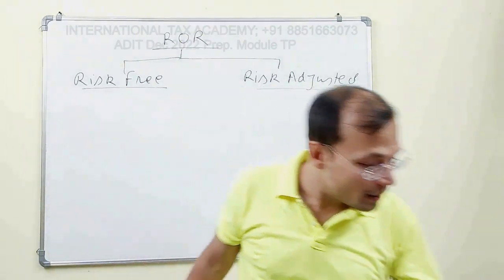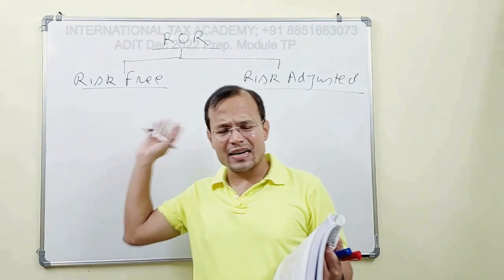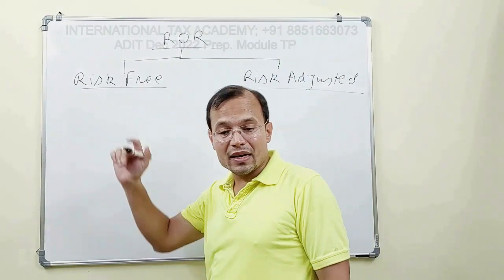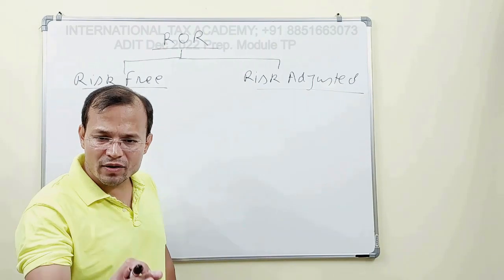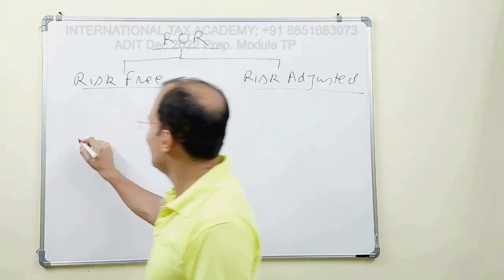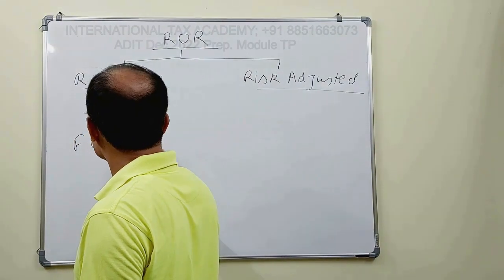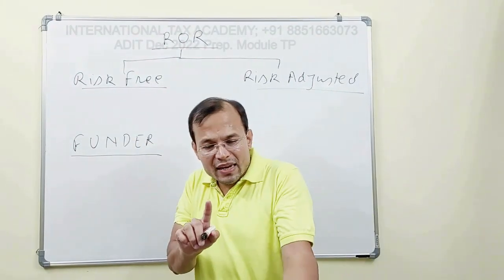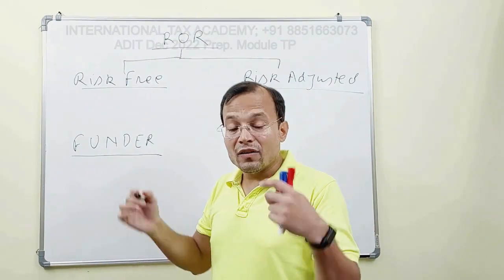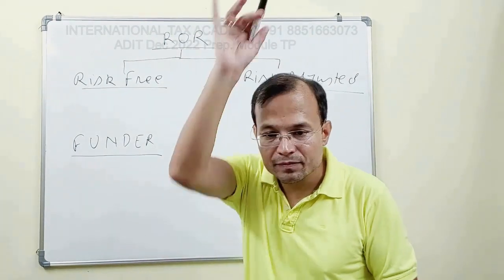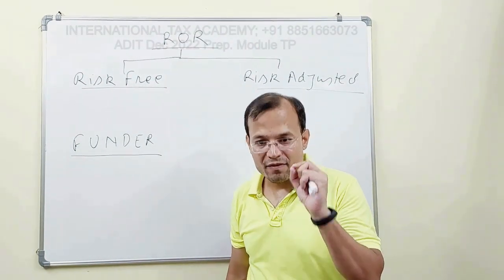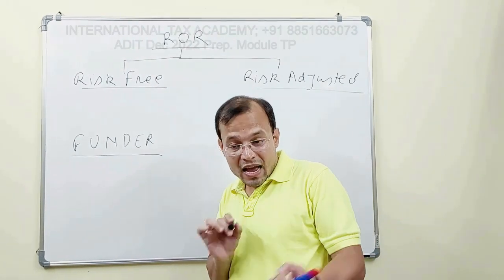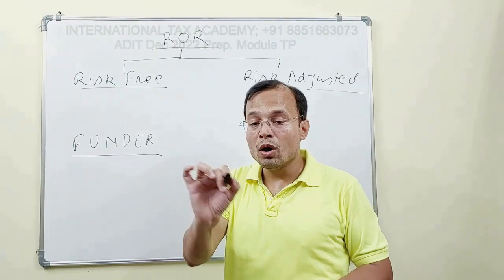Section D1221 addresses risk-free rate of return, and D1222 deals with risk-adjusted rate of return. Risk-free rate of return is defined as the rate of return which any funder — that is, any party who provides funds — will be entitled to if they do not exercise control over the financial risk.